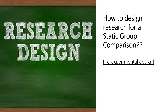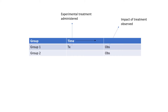Today's video is the third in the series and it talks about a pre-experimental design. The static group comparison involves both an experimental group as well as a control group. What you see on your screen is the form that the design takes. The experimental group, group one, is exposed to a particular experimental treatment, while the control group, group two, is not exposed to the treatment. After the treatment, both groups are observed and their performance is compared.